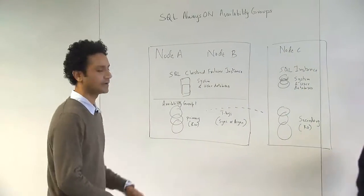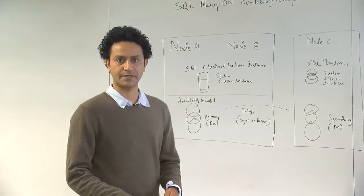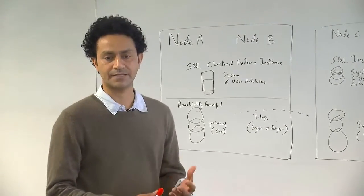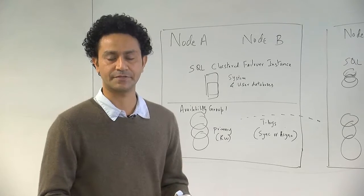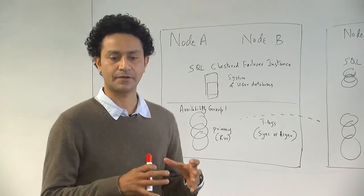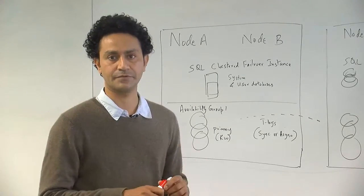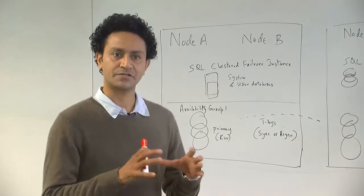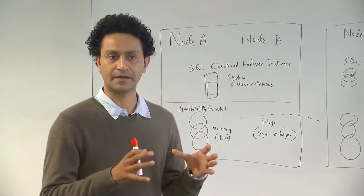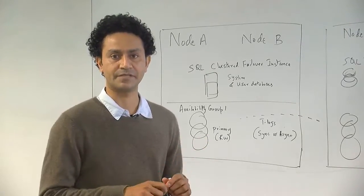SQL Always On Availability Groups were introduced in SQL Server 2012. It's primarily a disaster recovery high availability solution that was introduced for SQL Server. It allows you to create a discrete set of user databases that could be clustered or made into a group that can enable you to do the failover piece of it.